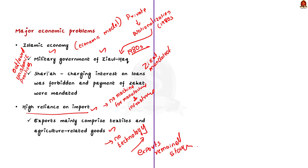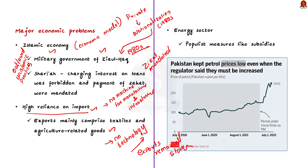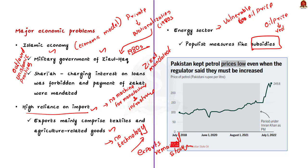When it comes to the energy sector, Pakistan is very vulnerable to hikes in global oil and gas prices. The populist measures of subsidies further aggravated the situation. Pakistan tried to keep petroleum prices cheap for the population even when global oil prices rose. By contrast, India hiked fuel prices when global oil prices went up, which meant India did not fall into such a trap. This is the third issue.